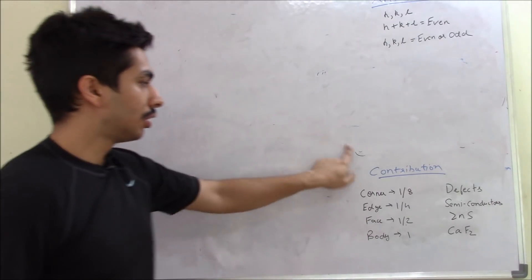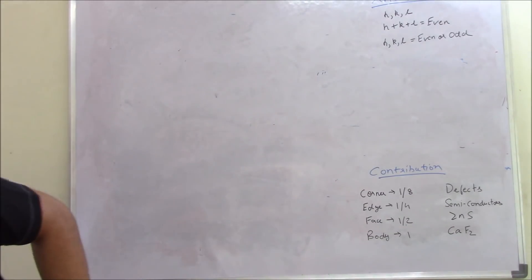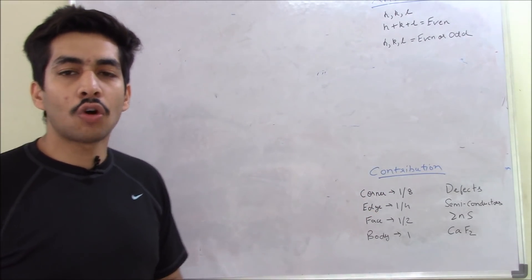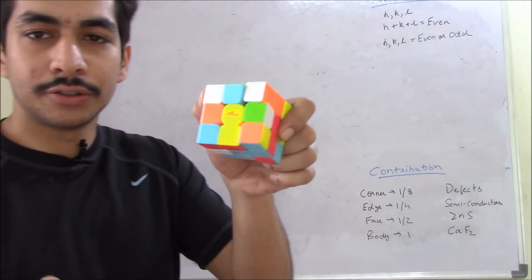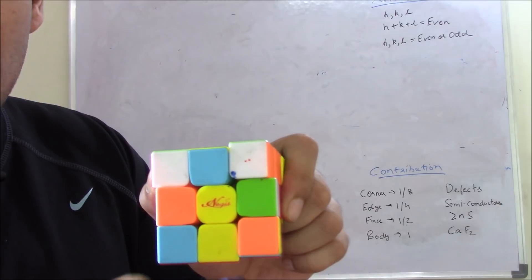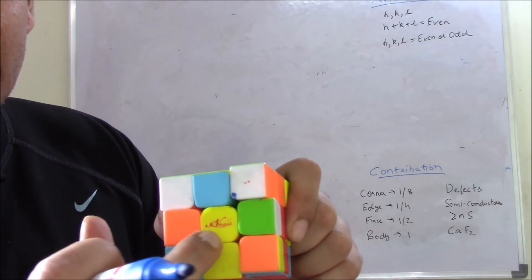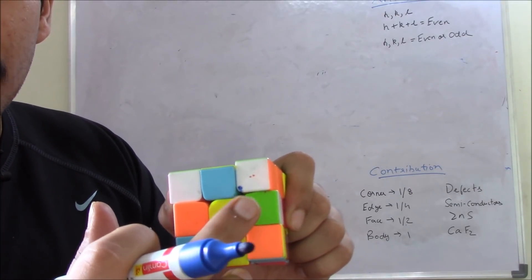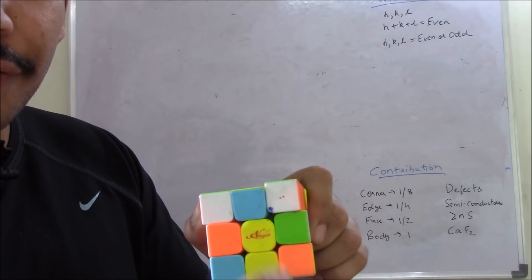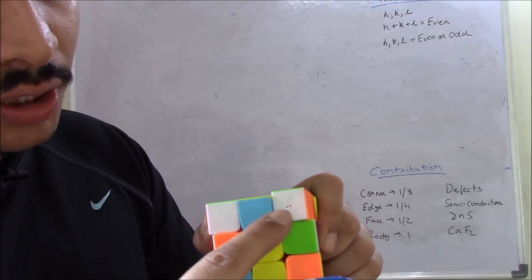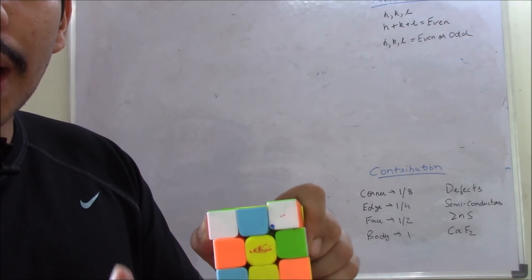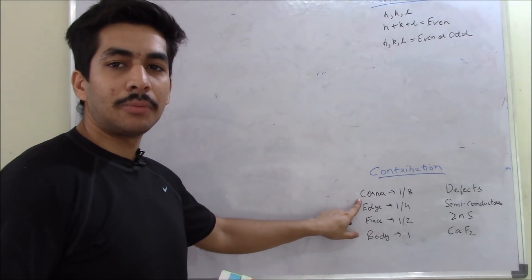Next we discuss contribution. I have a Rubik's cube in front of you. If an atom is at the corner, its contribution is 1/8. Take one corner — it is shared by this yellow cube, this blue cube, this white cube, and this green cube — that's four cubes. Plus there will be four more cubes in front of those, making eight cubes in total. That is why the contribution of one atom at a corner is 1/8. For an edge, the contribution is 1/4 — it is shared by four cubes.